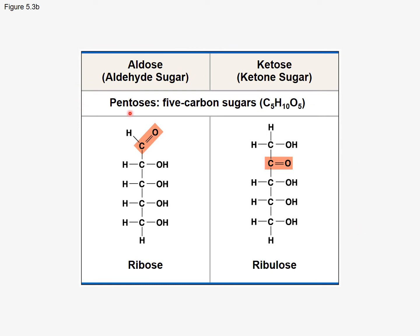Another type of sugar is the pentose, which is the general term for a sugar that has five carbons in its skeleton. We have an aldose and a ketose for pentoses as well. Some examples would be ribose and ribulose. Ribose has an aldehyde functional group, and ribulose has a ketone as a functional group. These also have hydroxyl groups because they're sugars, so they have these alcohol groups on them as well.